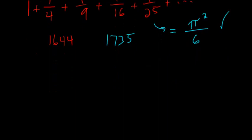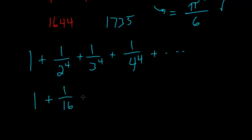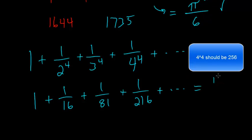And Euler extended this problem. Let's say, instead of doing all of the squares in the bottom, let's say I do to the fourth power. 1 plus 1 over 2 to the fourth power, plus 1 over 3 to the fourth power, plus 1 over 4 to the fourth power, and so on. This would be 1 plus 1 over 16, plus 1 over 81, plus 1 over 216, and so on.